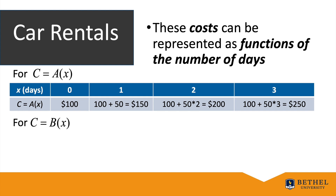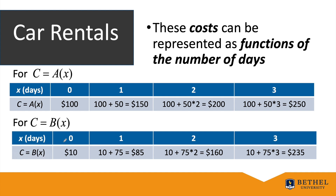For car rental B, the cost B(x): at time zero the cost is $10 (the base charge); after one day, $85; after two days, $160; after three days, $235. You can see these numbers are getting closer together — it looks like by the fourth day car rental B will cost more than car rental A.